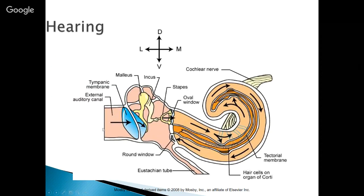Sound comes in as vibration, hits and vibrates the tympanic membrane, which moves the ossicles. Most of the signal goes through the oval window and hits at different points within the spiral cochlea, and then the air moves out the round window. The Eustachian tube helps to equalize the pressure within this area.